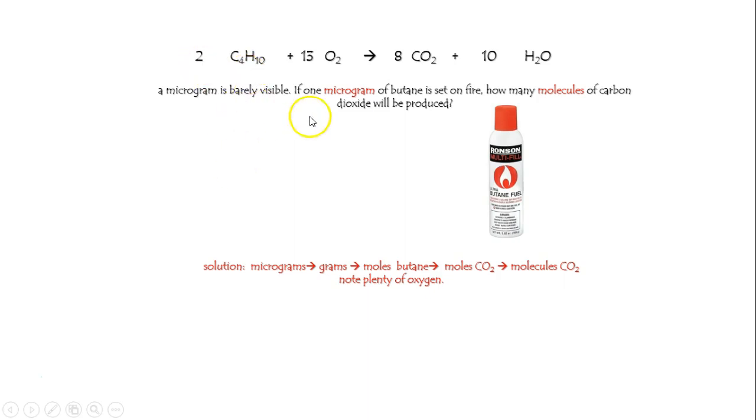We can then convert to moles of butane, since 58 grams is a mole. We then can convert to moles of carbon dioxide, since it will make four times as many moles, or molecules really.